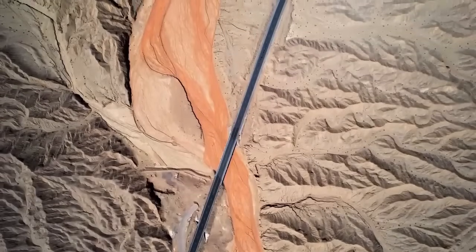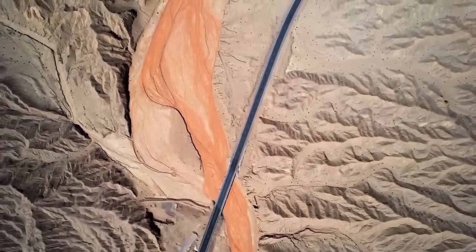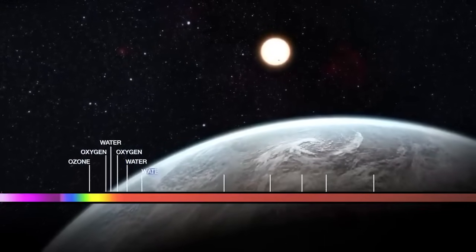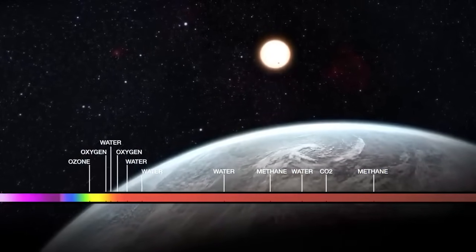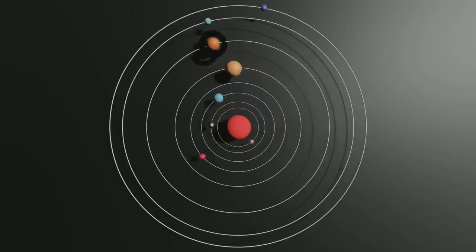To put this number in perspective, if each exoplanet were the size of a grain of sand, we would not only fill the Grand Canyon, but have enough to create a Grand Canyon 2.0 stretching for miles. What is most surprising is that about 20% of these celestial bodies have been classified as Earth-like.